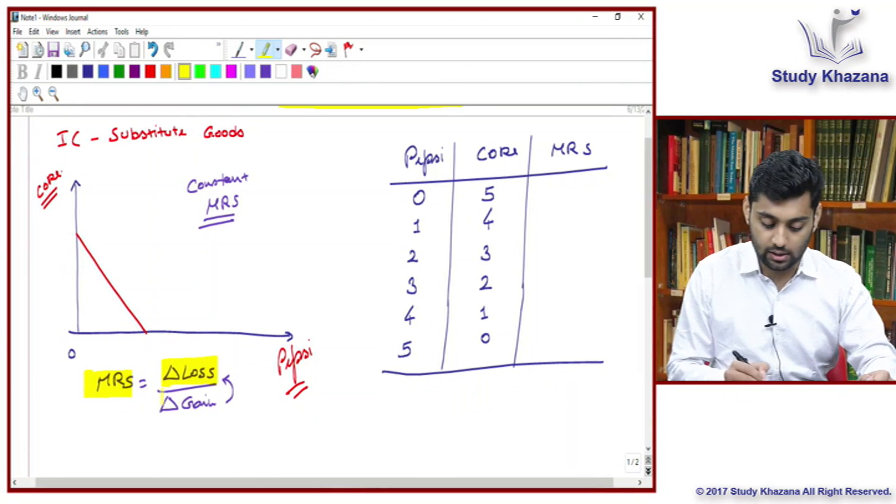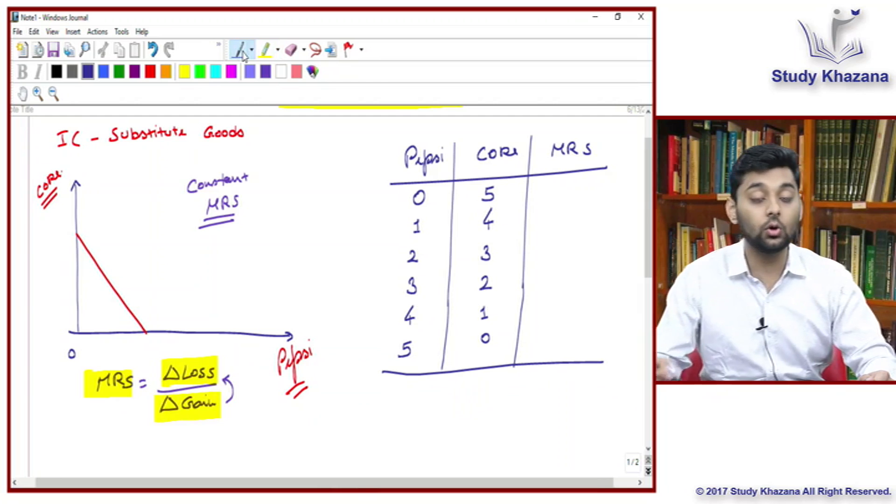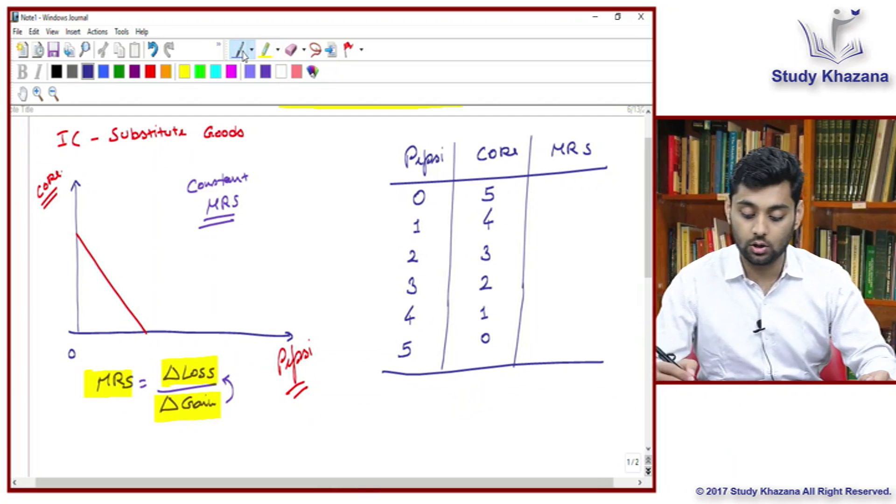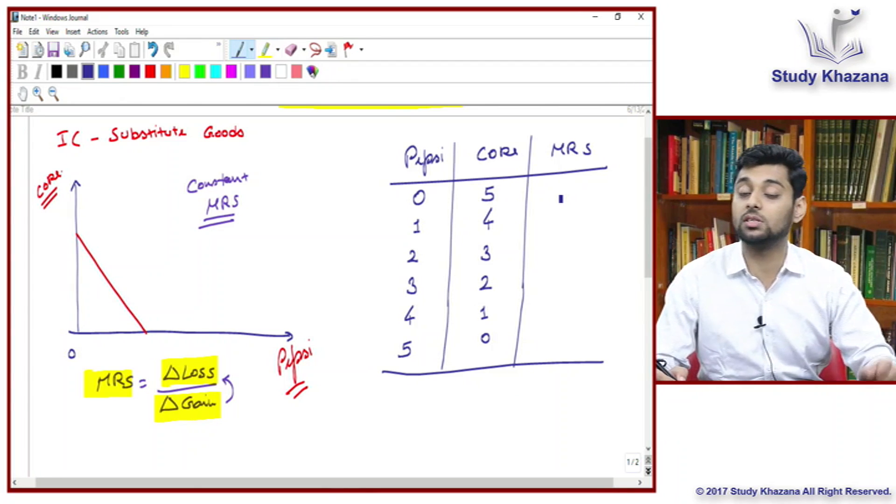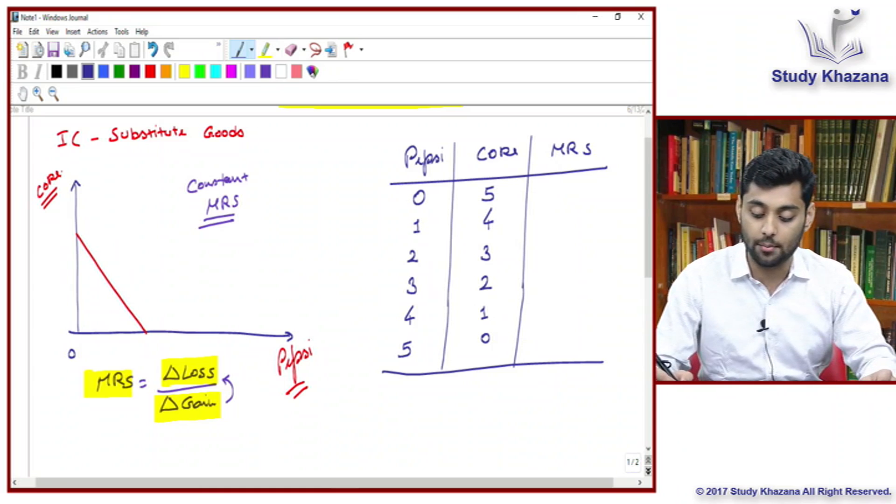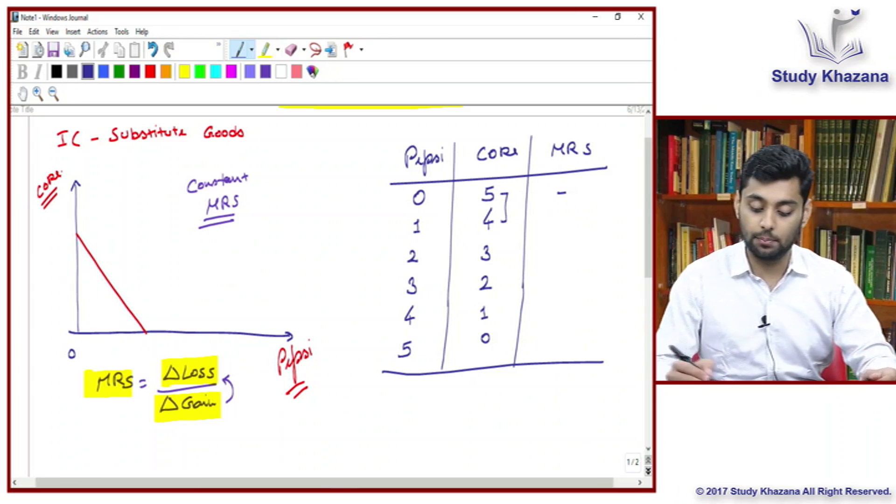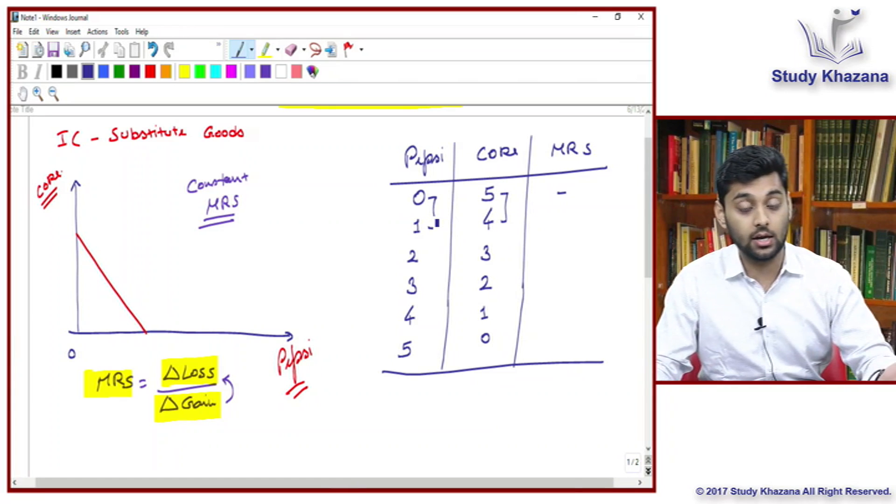So now you will have two Pepsi bottles. So in our case what are you losing? You are losing Coke. What are you gaining? You are gaining Pepsi. So MRS talks about the change. Change is always monitored by the second value. How many Coke bottles did you lose? One. And how many Pepsi did you gain? Again one.